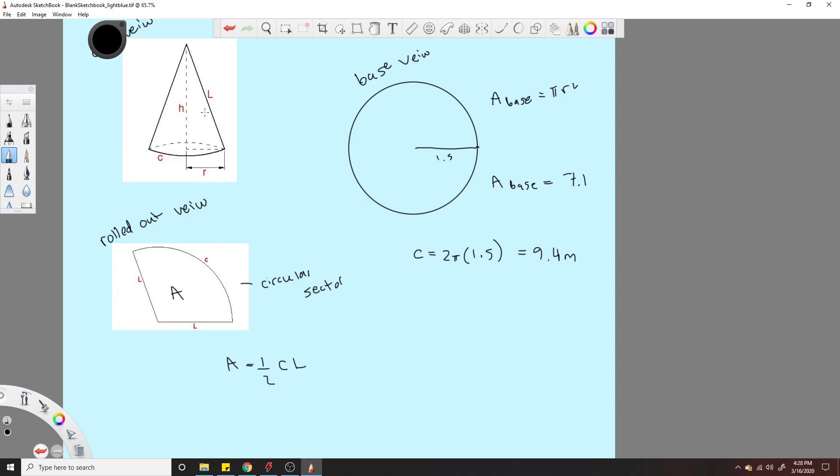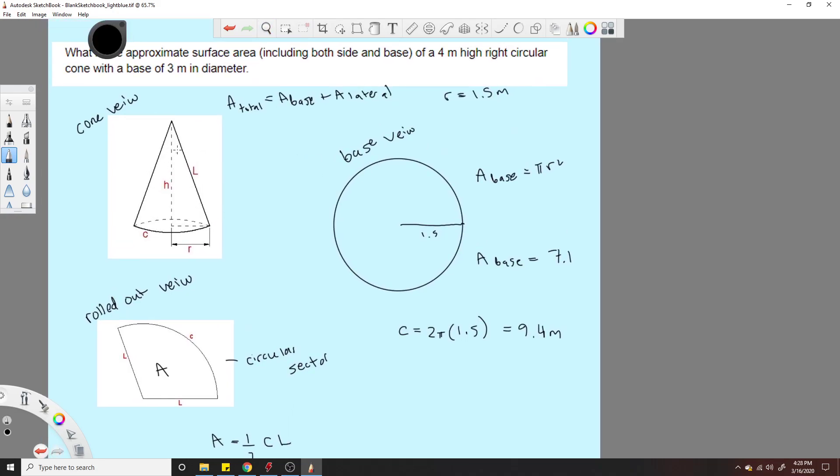Now L, L corresponds to this length here. I've heard it called like the slant height and stuff like that, but it's just this length here. Well, we don't know L, right? But we do know that it's 4 meters high. This is H is 4 meters. We do know that this R is 1.5 meters, right?